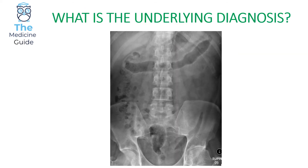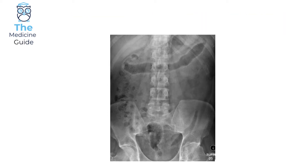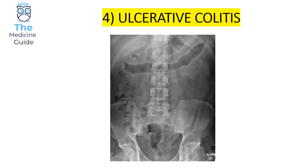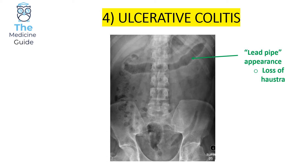Number four. This is an example of the lead pipe sign, which is found in ulcerative colitis. The lead pipe sign is a key classic finding of ulcerative colitis and represents a loss of haustrae. This is a very classic typical exam-style question that you will encounter concerning an abdominal x-ray with ulcerative colitis. If you got it wrong today, don't worry — hopefully you'll be able to recognise this come exam time.